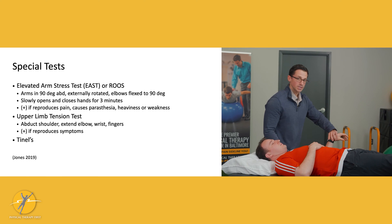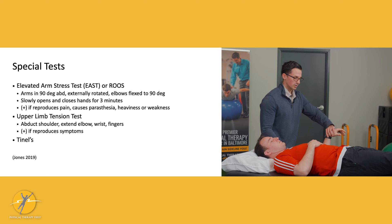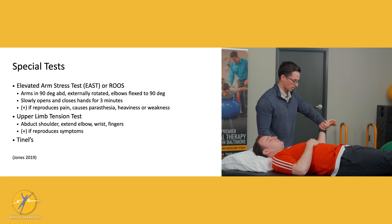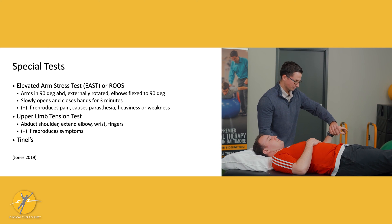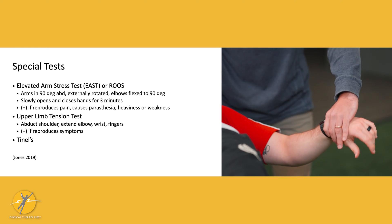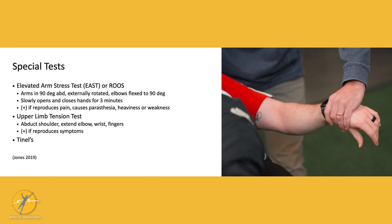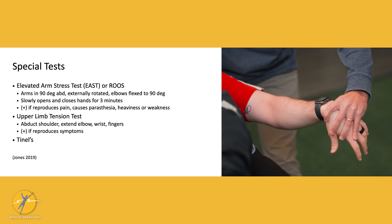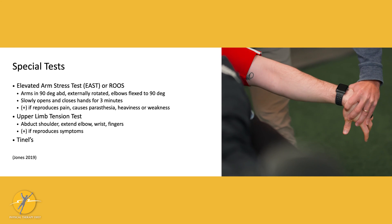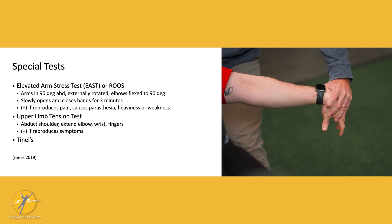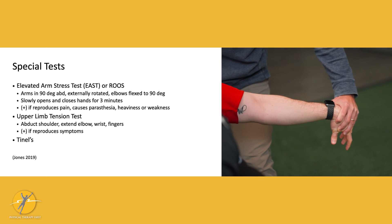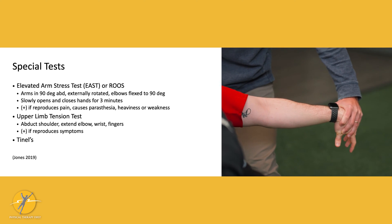To bias the radial nerve, the patient will again be supine. Depress the scapula a little bit, then internally rotate and pronate the forearm, flex the fingers and wrist, and then extend the shoulder to bias the radial nerve. Assess the mobility of that nerve and again see if there is any symptom reproduction.